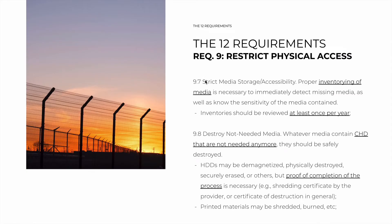9.7 is about strict media storage and accessibility — proper inventorying of the media. This is crucial so that you can immediately detect if any media go missing, as well as have a bird's-eye view of the sensitivity of all media contained. These inventories should be reviewed at least once per year.